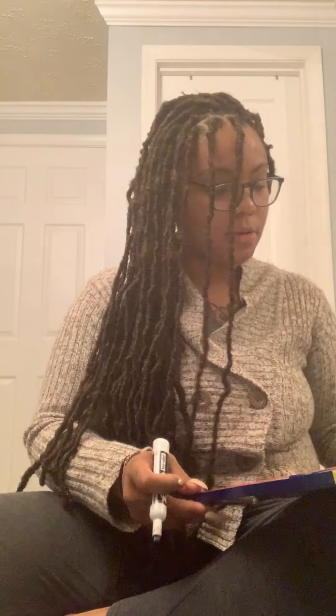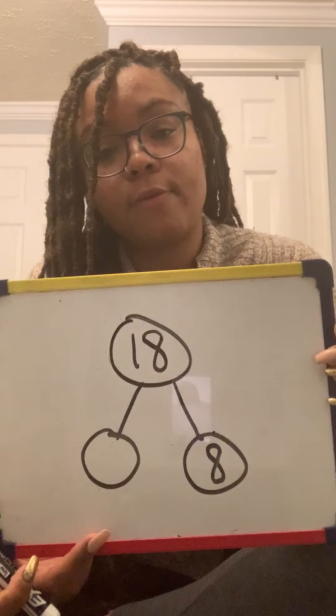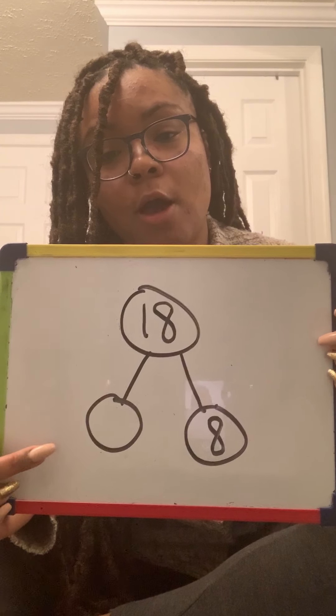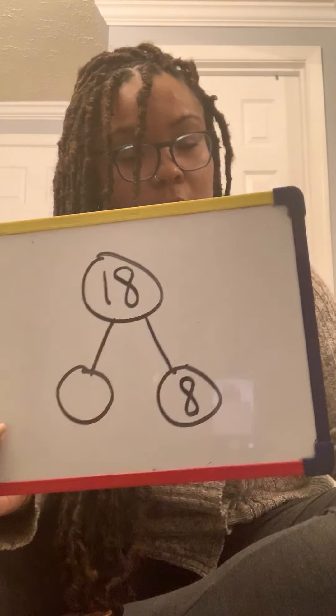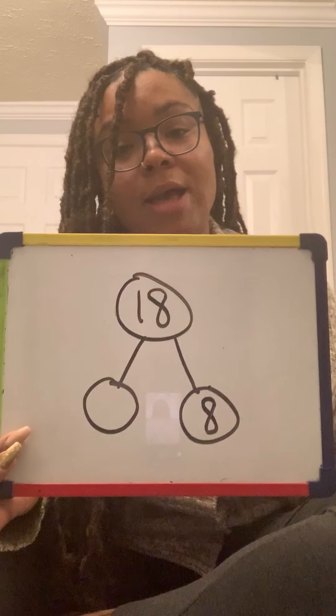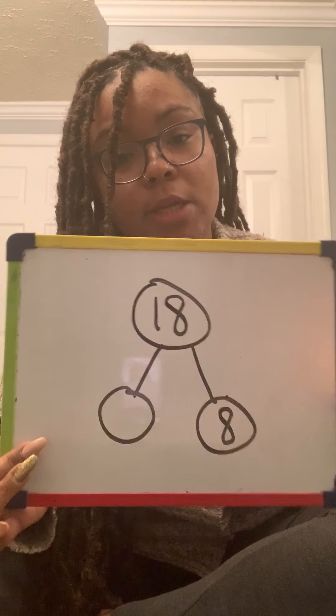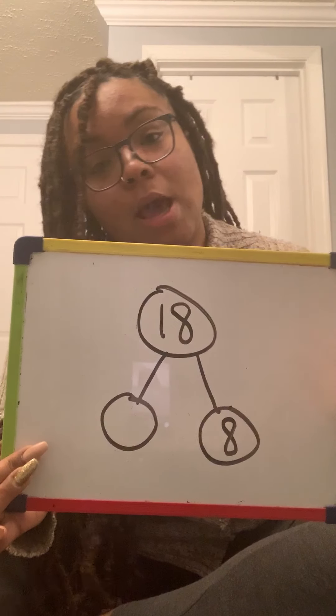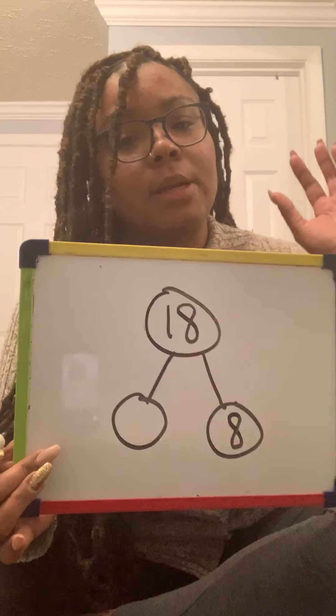Let's do one more together. Now, I want you guys to try the number 18. But this time, I'm going to give you one of the parts and I want you to fill in the other part. I'll give you 5 seconds to see if you can tell me what the other part is, focusing on 10s and 1s. I say this because there are other ways we can come up with 18, such as 9 and 9, because 9 plus 9 equals 18. But we want to focus on how many 10s and how many 1s. 3, 2, 1.